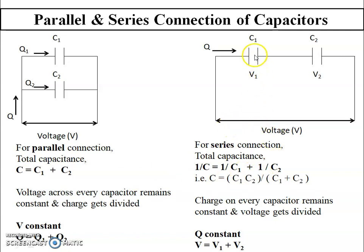In a series combination of capacitors, as shown in the figure on the right, C1 and C2 are connected in series across a voltage source. Total voltage V gets divided across each capacitor, so V = V1 + V2. The equivalent capacitance is 1/C = 1/C1 + 1/C2, giving C = C1·C2/(C1+C2). In series, charge on every capacitor remains constant since current doesn't divide, but voltage gets divided. This is completely opposite to resistors — for resistors in series we add directly, but for capacitors in series it is C1·C2/(C1+C2).